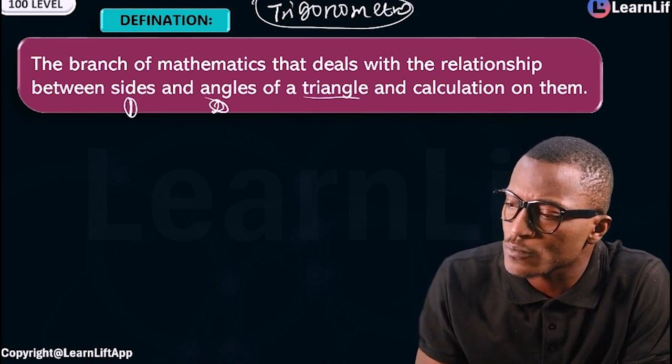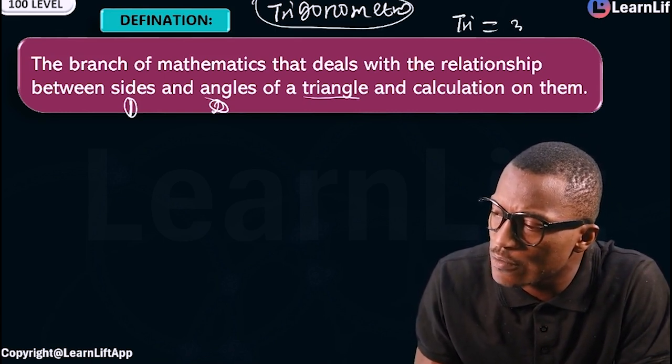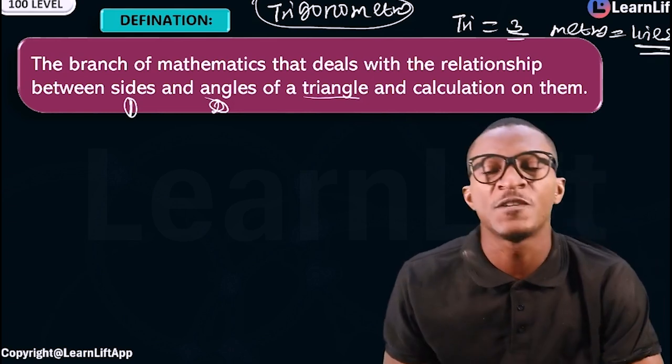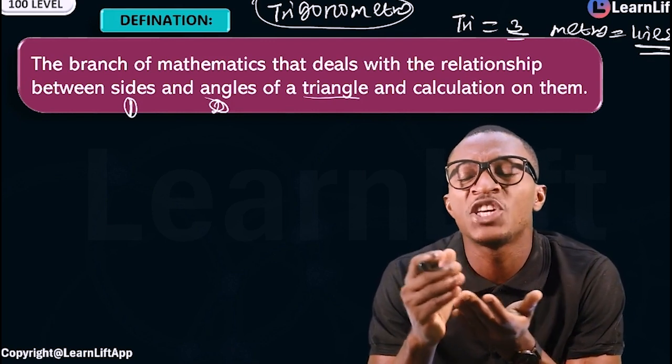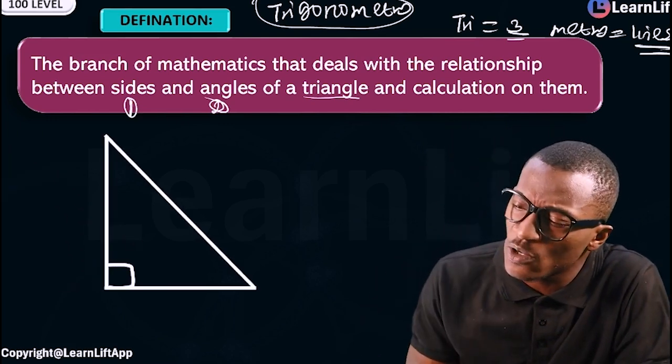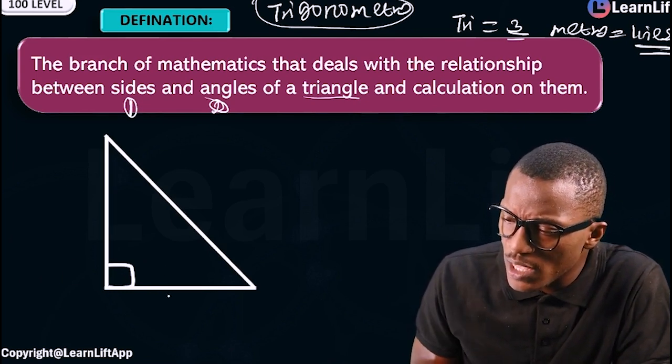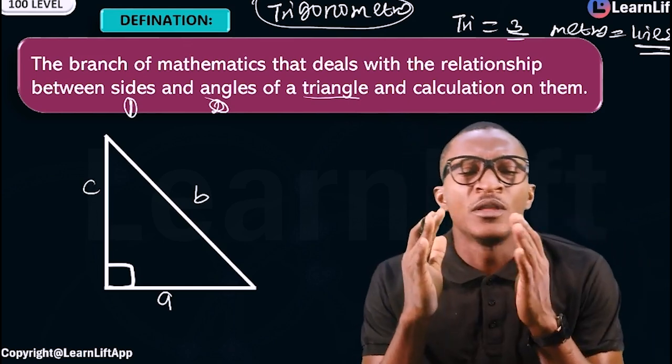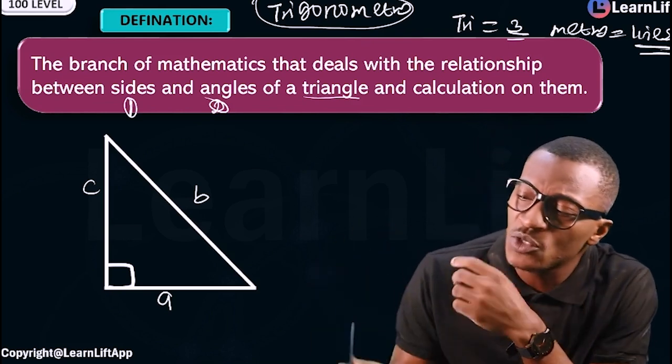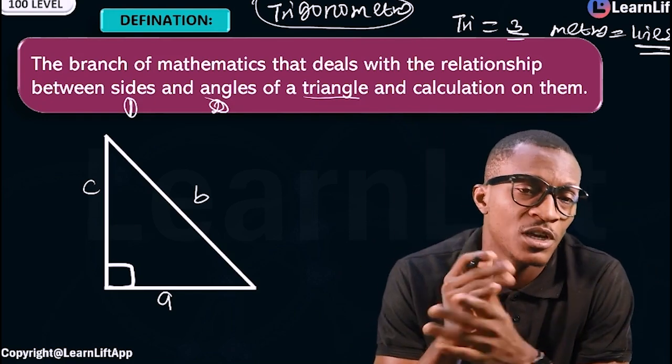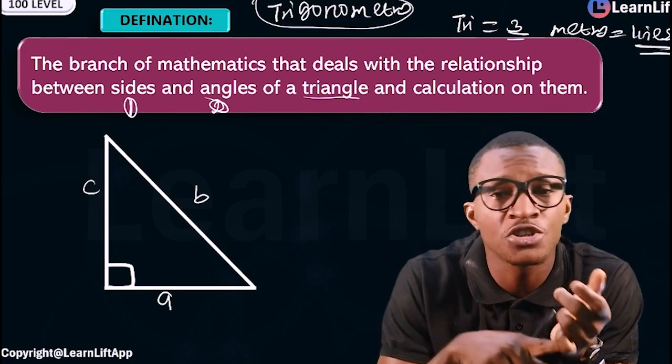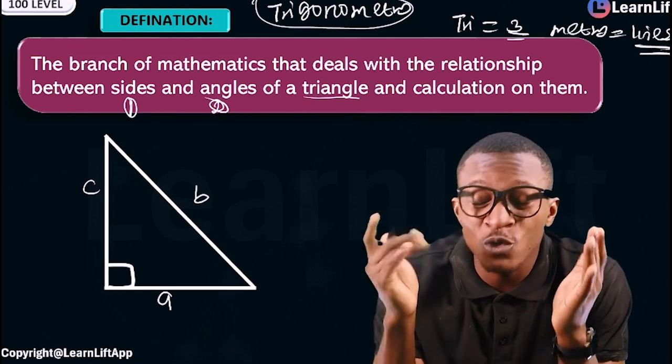The word trigonometry is gotten from two words. The first word is 'tri', which means three, and the word 'metry'. So in trigonometry we are based with a three-sided shape figure. When we draw the three-sided shape figure, let's call this A, let's call this B, and let's call this C. The branch of mathematics deals with the relationship between the sides - you can see the sides A, B, and C - and each side is going to have an angle. This deals with the sides and angles of a triangle and the calculation. The word 'tri' means three and the word 'metry' talks about measurement, so we are focused on a three-sided shape figure.